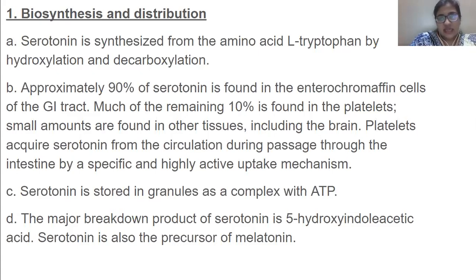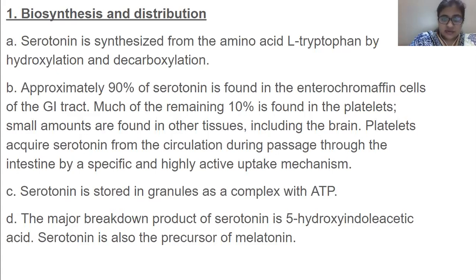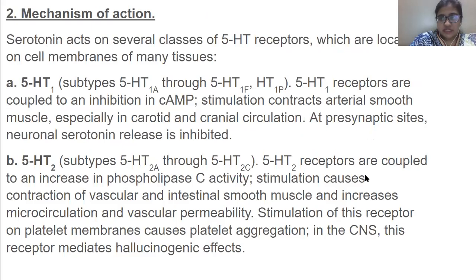Approximately 90% of serotonin is found in enterochromaffin cells of the GIT. Much of the remaining 10% is found in platelets, and small amounts are found in other tissues including the brain, which acquires serotonin from circulation during passage through the intestine. Serotonin is stored in granules as a complex with ATP. The major breakdown product is 5-hydroxyindoleacetic acid. Serotonin is also the precursor of melatonin, the pigment which gives pigmentation to the skin.